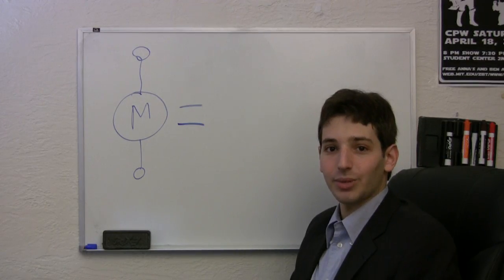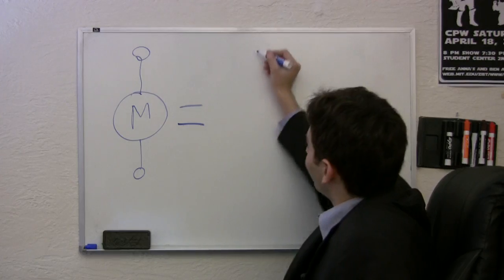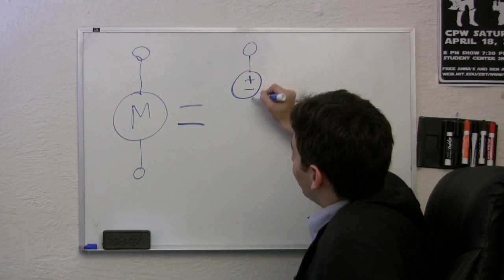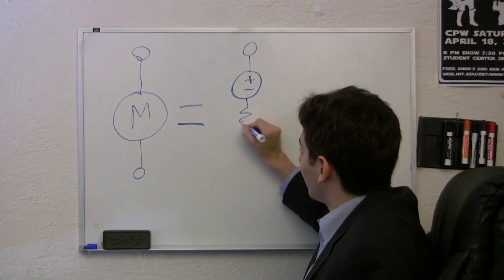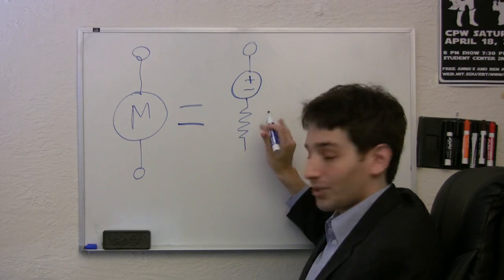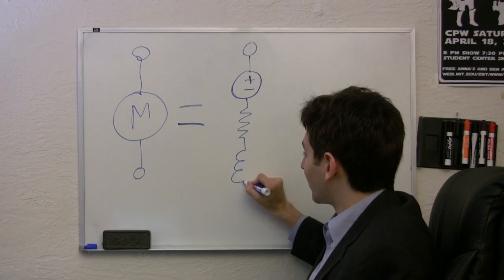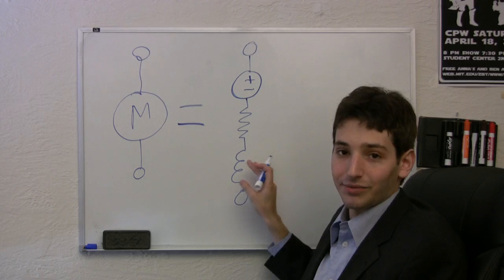So with those nine observations, we can now try to build a simple electrical model of the motor. First, we've got a voltage source. This represents the back EMF, and it's proportional to the speed. Then we have a resistor. This represents the resistance of the wires inside the motor. And finally, we have an inductor. This represents the energy stored in the magnetic field, and that's the reason for the spark.